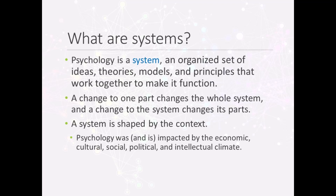Here are some examples. The family unit is a system of people and their relationships and interactions with one another. Governments are systems of representatives, rules, and procedures. And interstates are physical systems of roads, ramps, and signs.